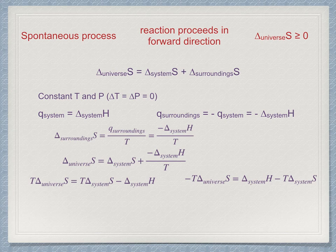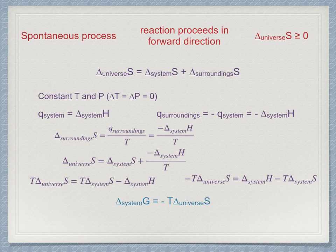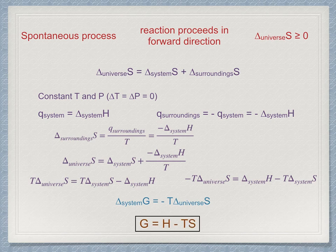On the left-hand side, we have the change in entropy of the universe, which is the criterion for spontaneous change. We rename the left-hand side delta G system, the change in Gibbs energy. G is known as the Gibbs function, also known as Gibbs energy or as Gibbs free energy. The Gibbs function is defined as G equals H minus TS.